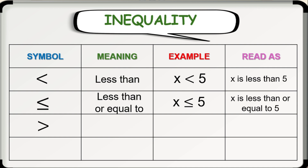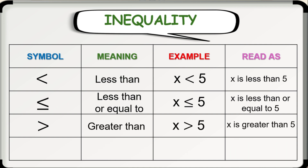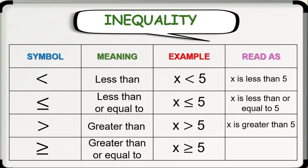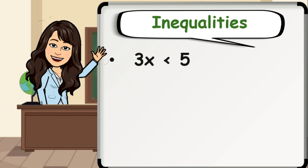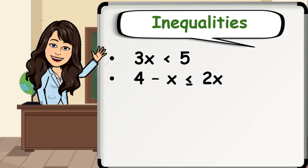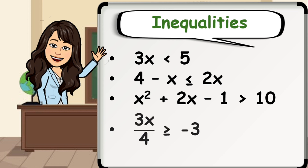Next is the symbol for greater than. For example, x is greater than 5. And lastly, the symbol for greater than or equal to. For example, x is greater than or equal to 5. Here are some examples of inequalities: 3x is less than 5; 4 minus x is less than or equal to 2x; x squared plus 2x minus 1 is greater than 10; and 3x over 4 is greater than or equal to negative 3.